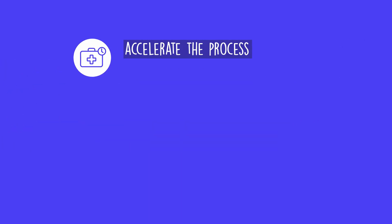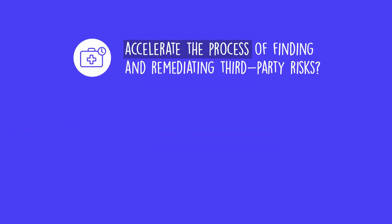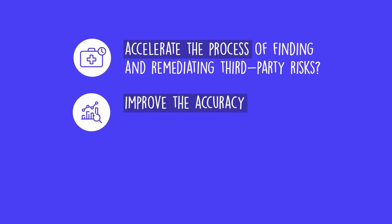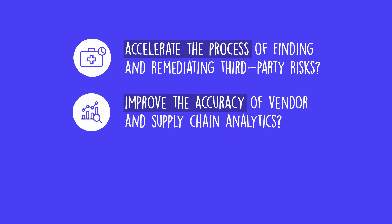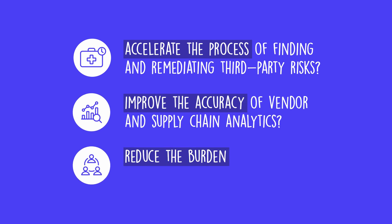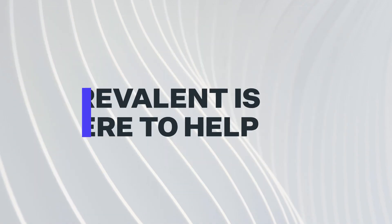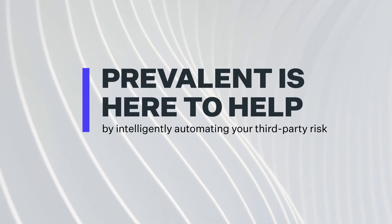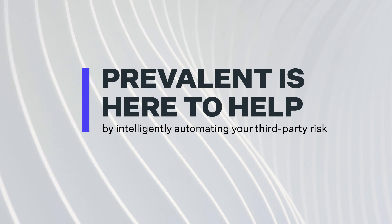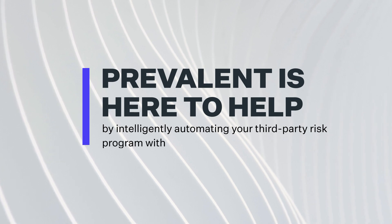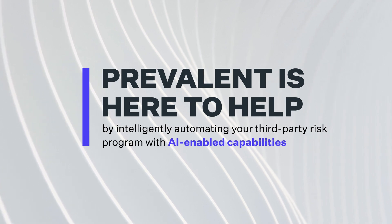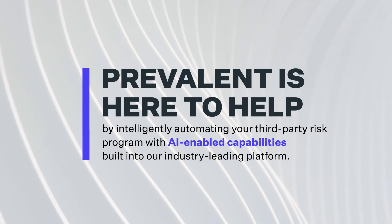So how can you accelerate the process of finding and remediating third-party risks, improve the accuracy of vendor and supply chain analytics, and reduce the burden on overstretched teams? Prevalent is here to help by intelligently automating your third-party risk program with AI-enabled capabilities built into our industry-leading platform.